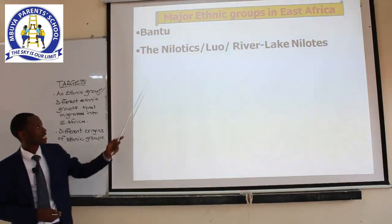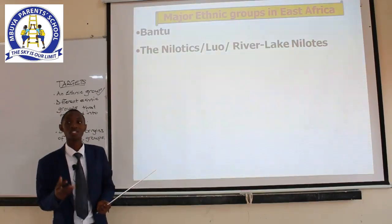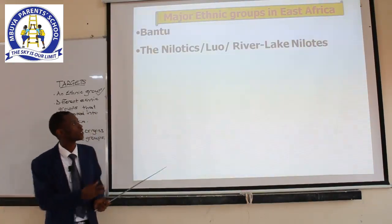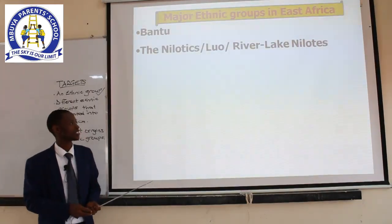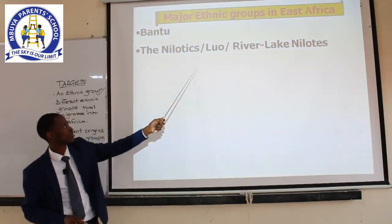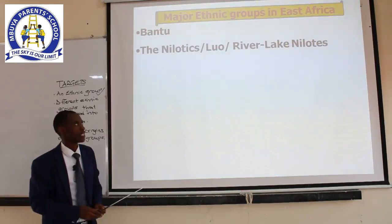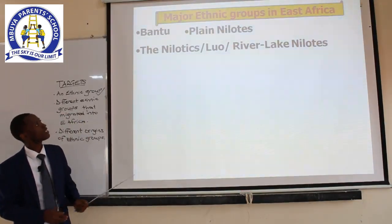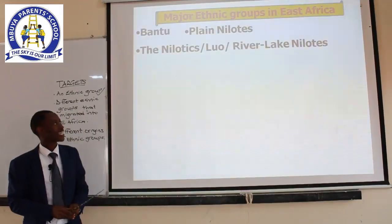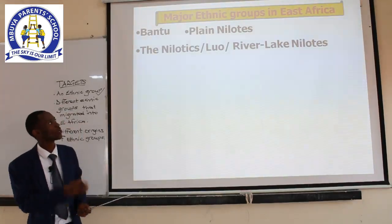Number two: we have the Nilotic people — you can call them the Luo people or the Luo speakers, because they speak the Luo language. You can also call them the River Lake Nilotics. So this ethnic group has three names: the Nilotics, the Luo speakers, or the River Lake Nilotics. Ethnic group three: we have the Plain Nilotics. As you hear the word plain, they get their name from the area where they settled — they settled in plain areas.